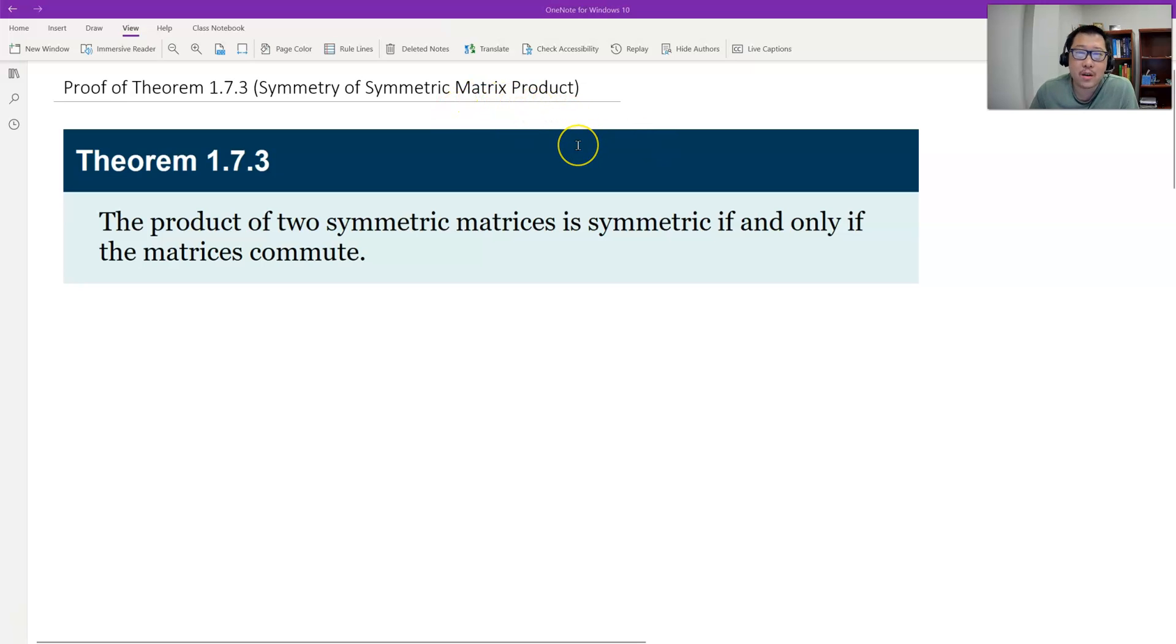which is the symmetry of symmetric matrix product. The product of symmetric matrices. And let's look at the product of two symmetric matrices. It's symmetric. It's equivalent to the two matrices are commuted.